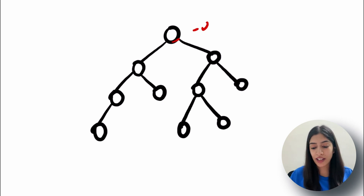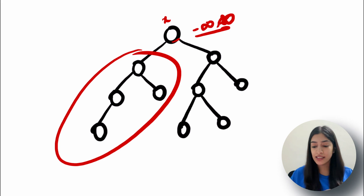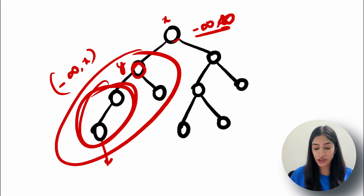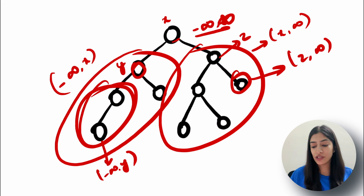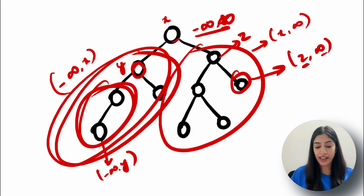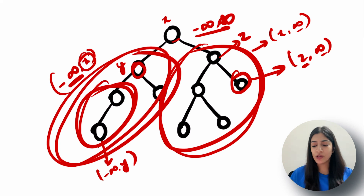Quick recap: the root can have values from negative infinity to infinity. If the root value is x, all left nodes should be in (−∞, x), and all right nodes in (x, +∞). Say the left child value is y — then its left subtree range is (−∞, y). For the right subtree with value z, the range becomes (z, +∞). Going left, the upper bound tightens; going right, the lower bound tightens. This is why the previous naive approach fails.